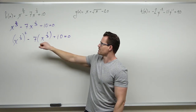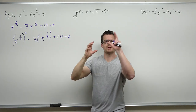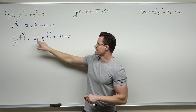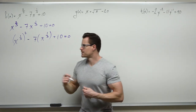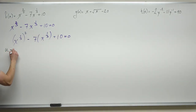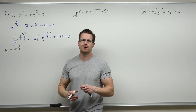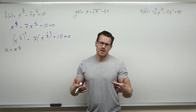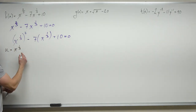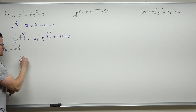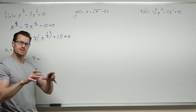We always want to show our trail of breadcrumbs — the substitution — so people following us know what we just did. Since we're calling x to the one-third the variable u, we replace x to the two-thirds with u squared and x to the one-third with u. That's why they had to be the same — so we could call them the same variable. Now we have u squared minus 7u plus 10 equals zero, and we're ready to factor.